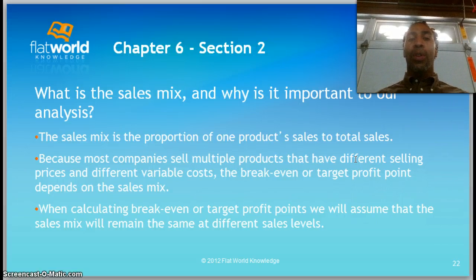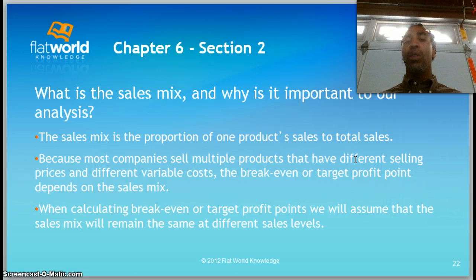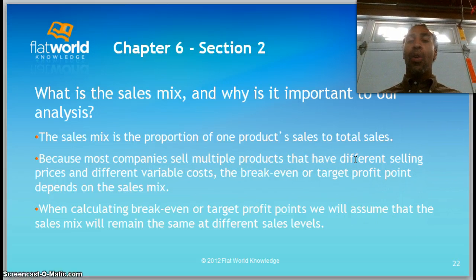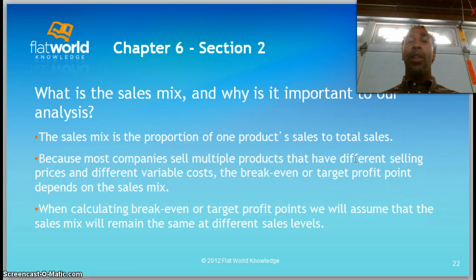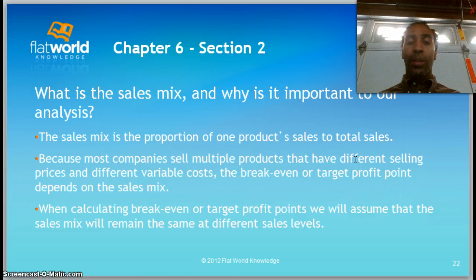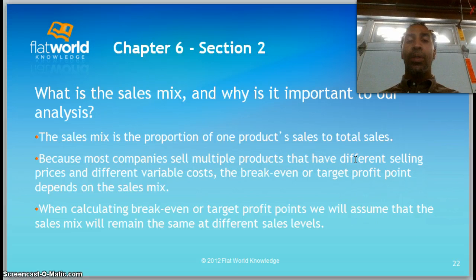So what is the sales mix and why is it important? The sales mix is the proportion of one product's sales to total sales. If I have 100% of total sales and sell 80 of ABC and 20 of XYZ, then 80% of the sales mix goes to ABC and 20% to XYZ. Because most companies sell multiple products with different selling prices and variable costs, the break-even or target profit depends on the sales mix. We'll assume the sales mix remains constant at different sales levels.